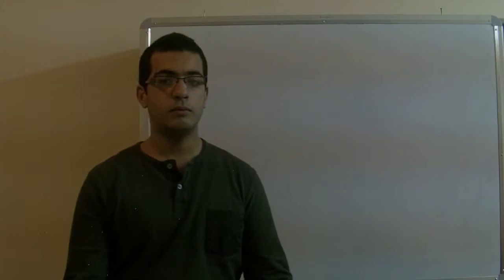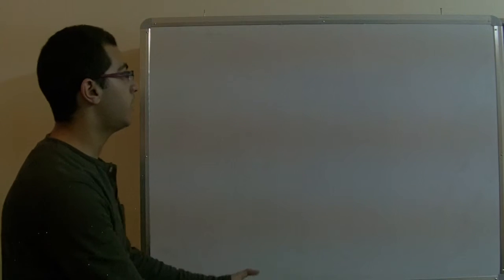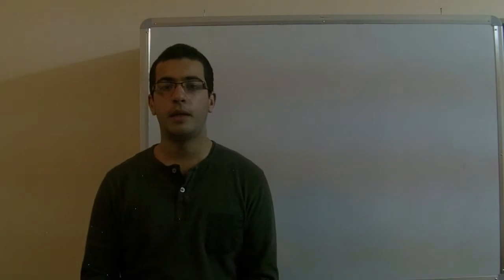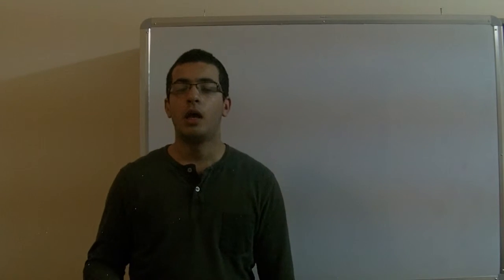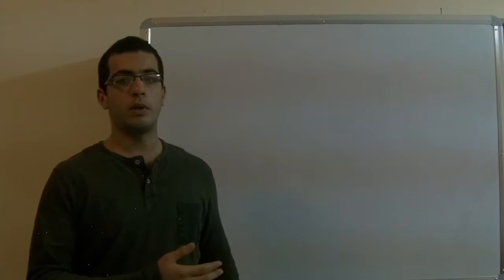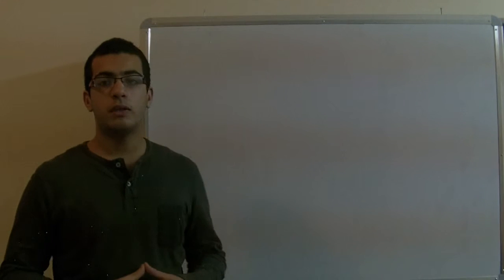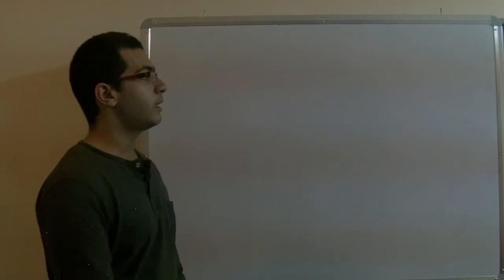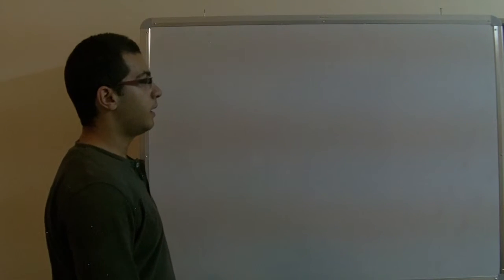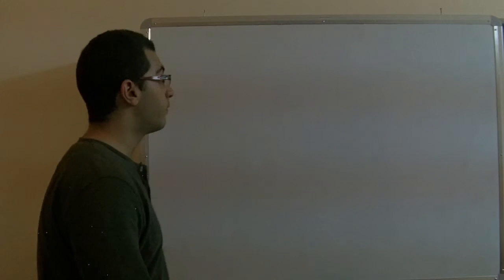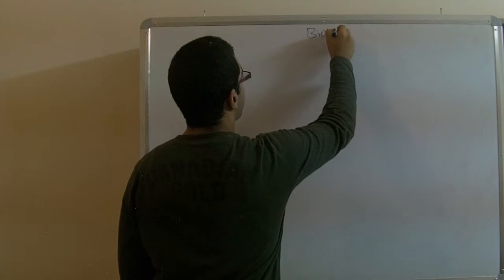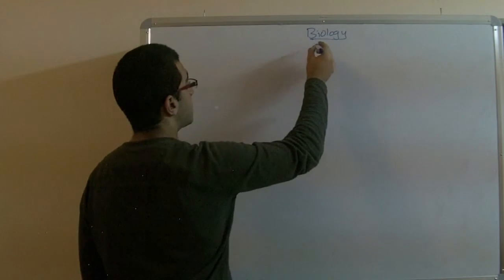Hello and welcome back. Today we will continue our explanation of chapter 1 in biology. We talked about how water is important for the plant in order to carry out the photosynthesis process, the ways by which the plant absorbs water, and the mineral salts which are important for photosynthesis. We didn't talk about the methods by which the plant absorbs them yet, but before that we have to illustrate something.